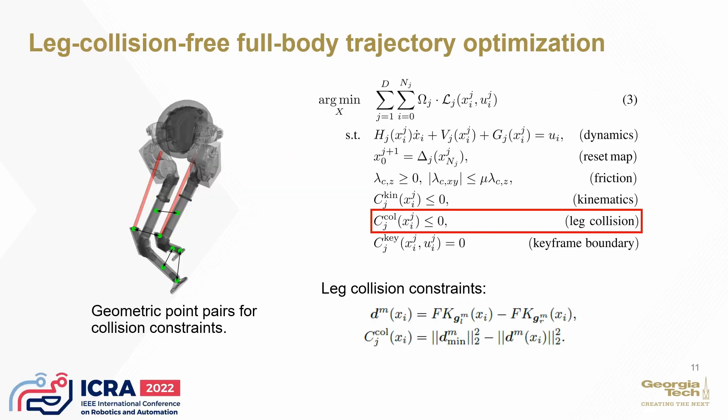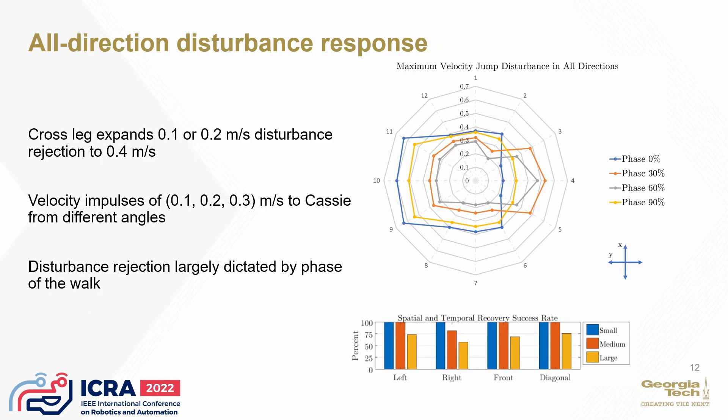To safely execute these transition actions with more detailed constraints, we formulate a whole-body optimization problem with kinematic, contact, and collision constraints. This is further quantified by examining the maximum instantaneous velocity impulse at various phases and angles of a single stance foothold. The left-half plan represents single-step disturbance rejection, and the right-half plan represents cross-legged disturbance rejection.